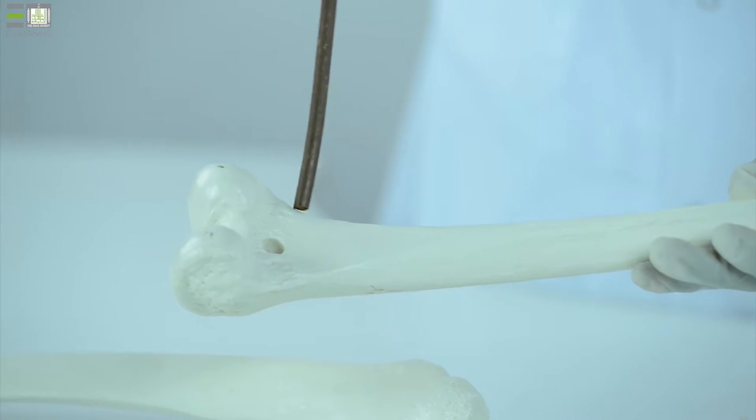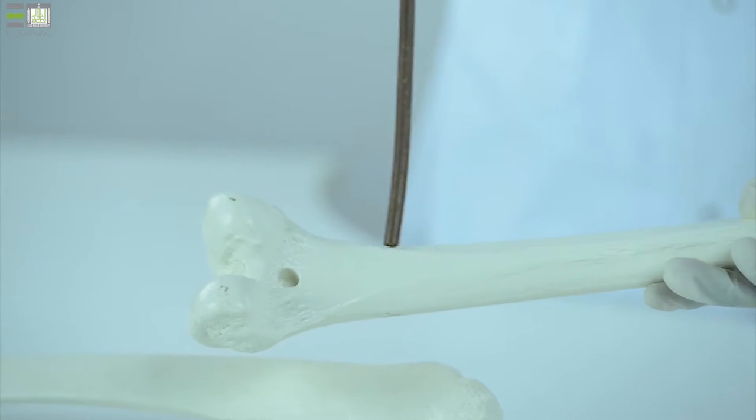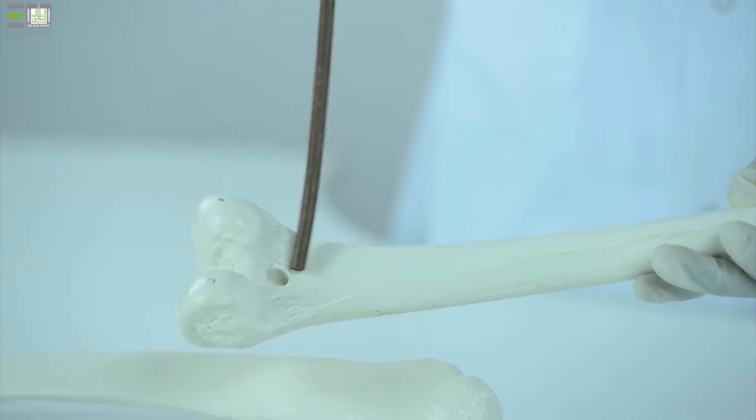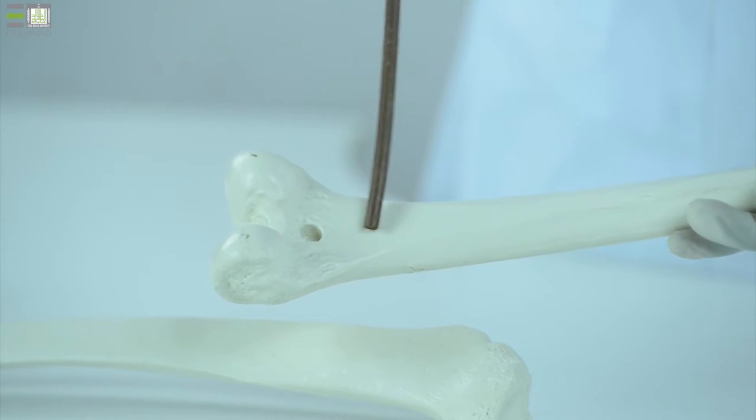We call them supracondylar ridges, the medial and lateral supracondylar ridges, and they leave triangular area on the lower part of the femur called popliteal surface of the femur.